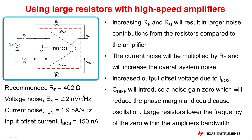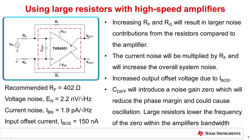Many high-speed amplifier data sheets recommend a range of values for the feedback resistor. The circuit designer is free to vary the value of RF, but should be aware of the trade-offs when doing so. Increasing RF and RG will result in larger noise contributions from the resistors compared to the amplifier's voltage noise. For example, the thermal noise of a 402-ohm resistor is 2.6 nV per root hertz and is already greater than the THS4551's voltage noise. Increasing the feedback resistance further will limit the system's signal-to-noise ratio, or SNR.